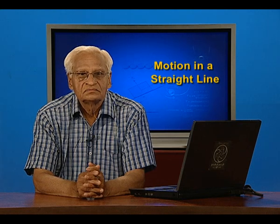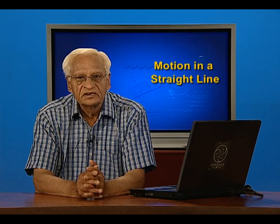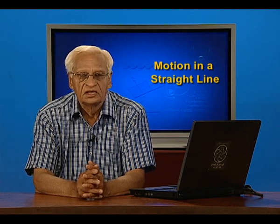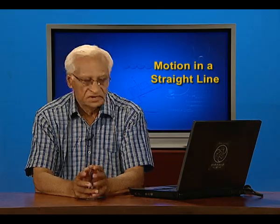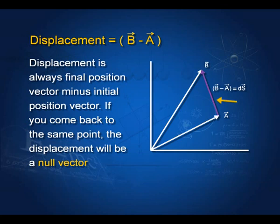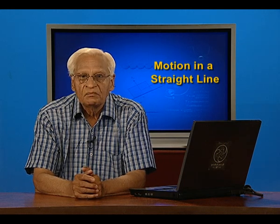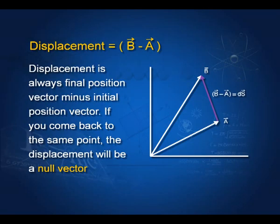We start with displacement. You know already that displacement is the difference between the final position vector of a body and the initial position vector of a body. We shall denote displacement by capital S with an arrow on it, whereas the distance covered we shall show by small s.